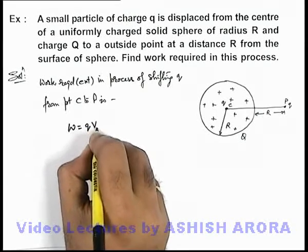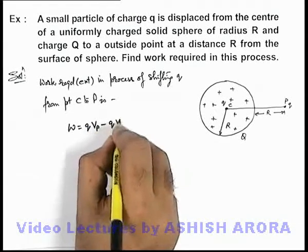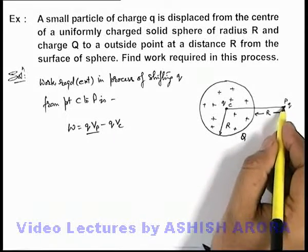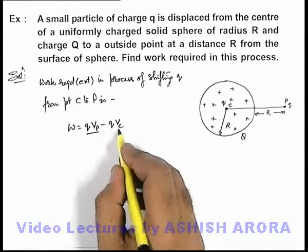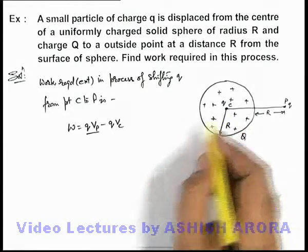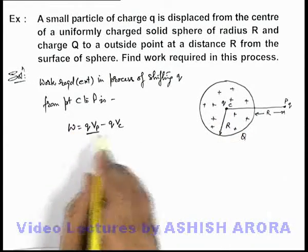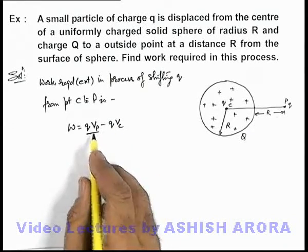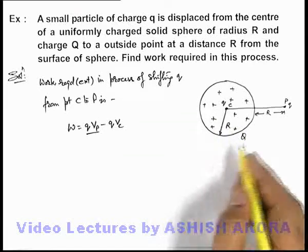So we write q times V_P minus q times V_C. Here qV_P is the potential energy of the charge at point P, that is the final energy. qV_C is the potential energy of charge q at point C, which is the initial energy. External work is always final energy minus initial energy.